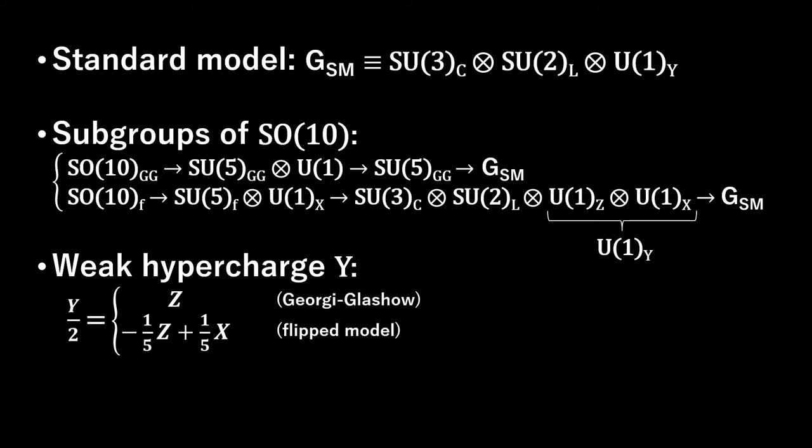The flipped SU-5 model is a grand unified theory, GUT, first contemplated by Stephen Barr in 1982 and by Dimitri Nanopoulos and others in 1984.